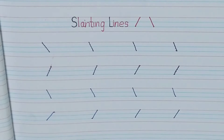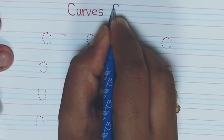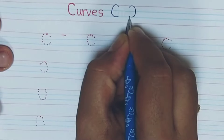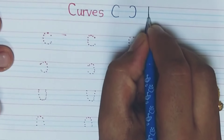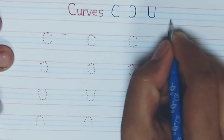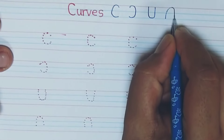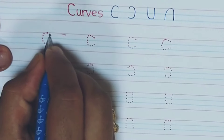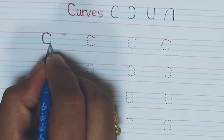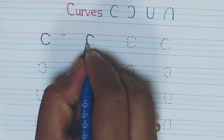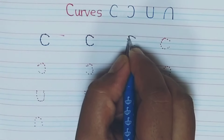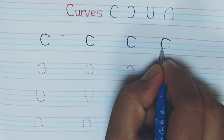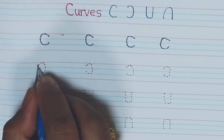Next, we practice curves — left curve, right curve, down curve, and up curve. First, we trace the dot starting from the point, touch the red line, and come down. This is a bent line to the left side — a left curve.